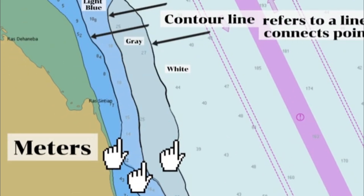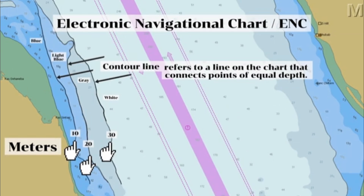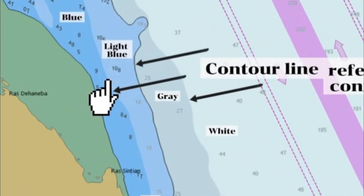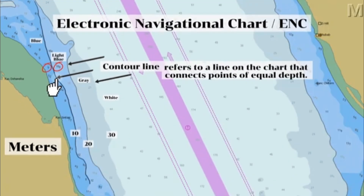There are also ENCs where the contours are available in 5 meters, 10, 20, 30, 40, 50 meters, and so on at regular intervals. We can find the available value of the different contours of the particular ENC in the electronic chart display and information system, or ECDIS. If we look at the spot sounding on both sides of this contour line, the spot sounding in the blue shaded area is 9 meters and 10.8 meters in the light blue. It means that this contour line is showing an equal depth of 10 meters.